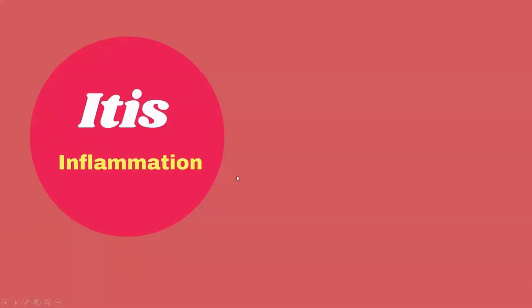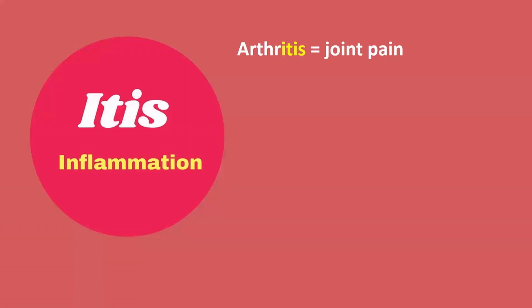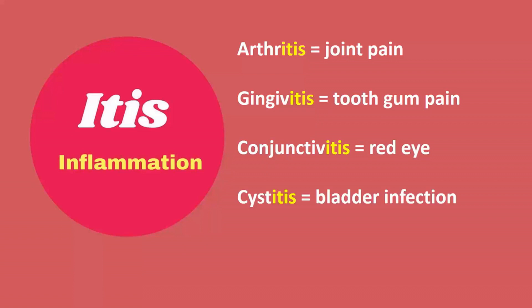Suffix itis means inflammation. Examples: arthritis is joint inflammation, gingivitis is tooth gum inflammation, conjunctivitis is red eye, cystitis is bladder infection, cellulitis is skin infection.